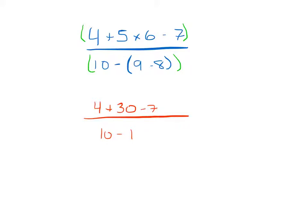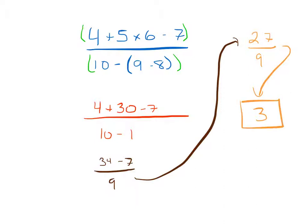We've got that, the next step here then, 4 plus 30 will be 34 minus 7, 10 minus 1 will be 9, so I'll continue working up here. 34 minus 7, that's going to be 27 over 9. 27 over 9 that will equal 3, so my answer here for example 3 would be 3.